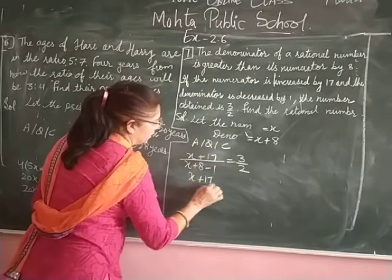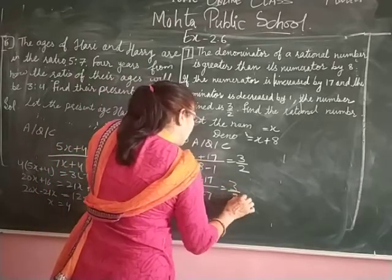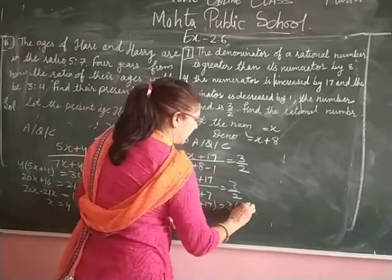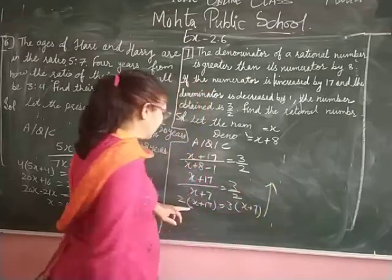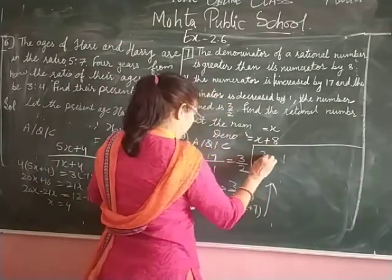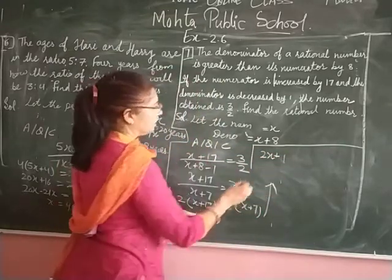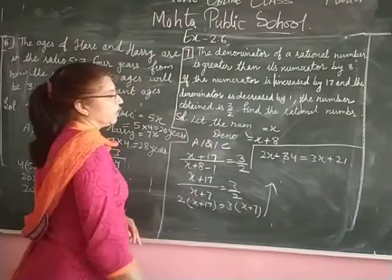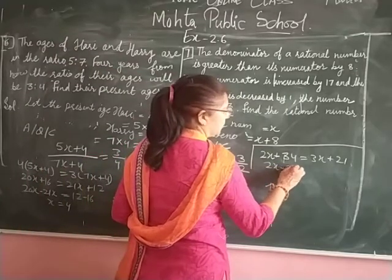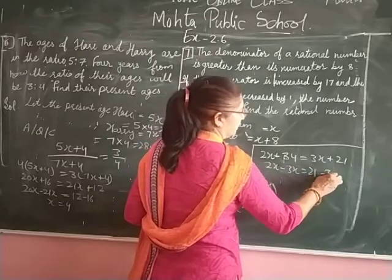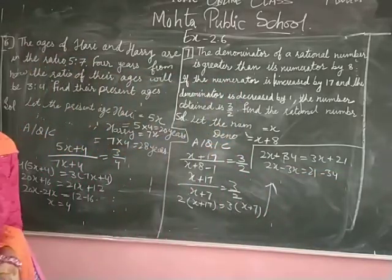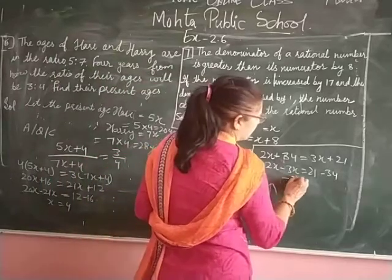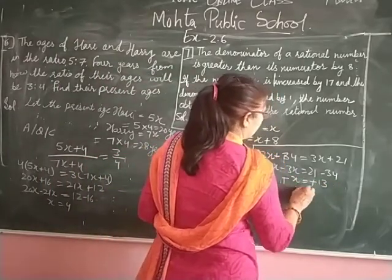So we write: (x plus 17) upon (x plus 8 minus 1) is equal to 3 upon 2. Cross-multiplying: 2(x plus 17) is equal to 3(x plus 7), giving 3x plus 21. Simplifying: minus 3x plus 2x gives minus x plus 21, and 34 minus 21 gives minus x equal to minus 13, so x is equal to 13.